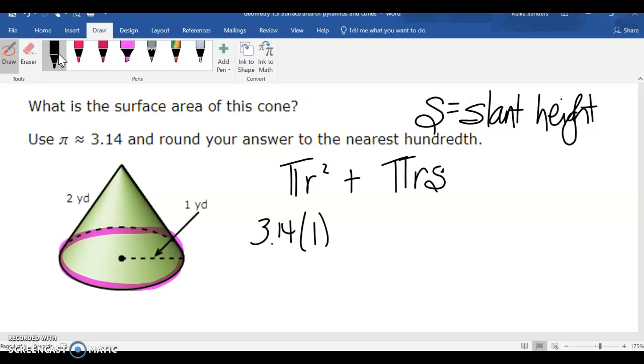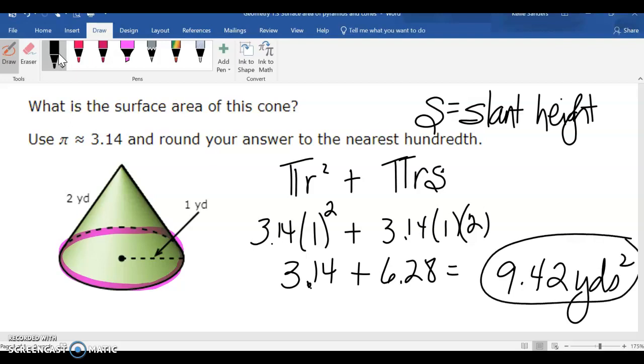So, 3.14, the radius of the circle is 1, 3.14 times 1 times 2. So, this is 3.14, 6.28, 12, 2, 4, 9, 9.42 yards squared.